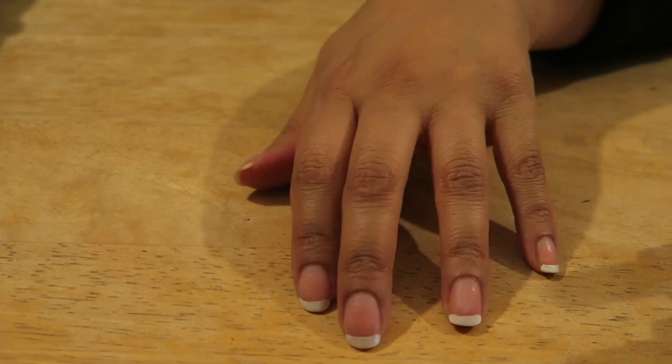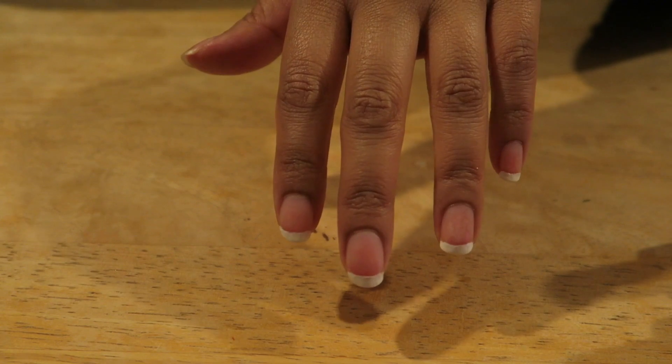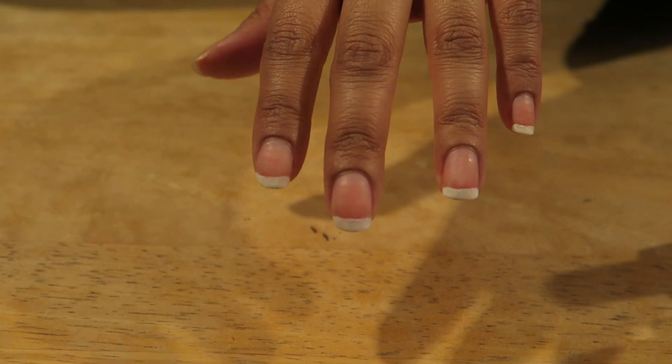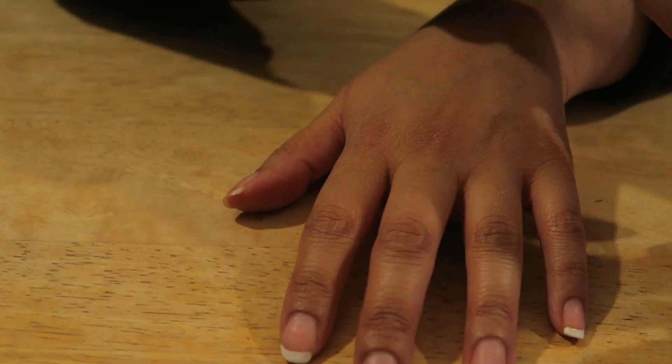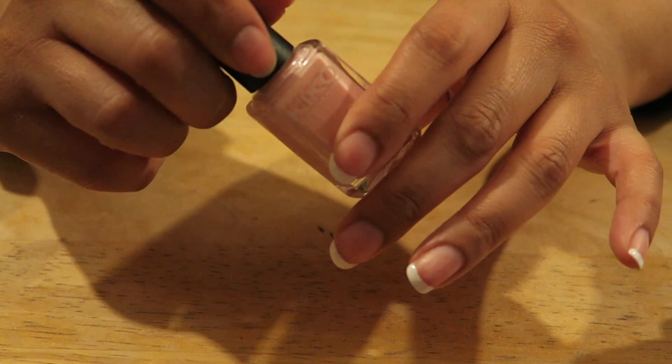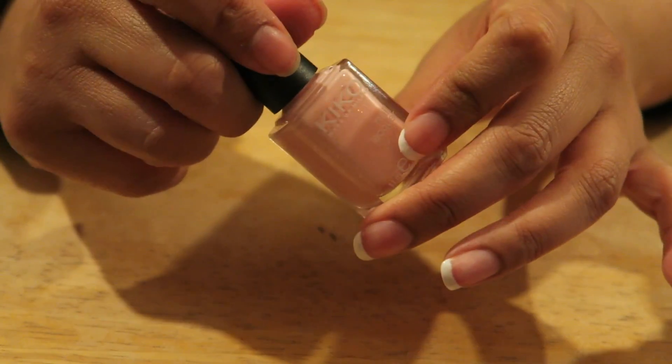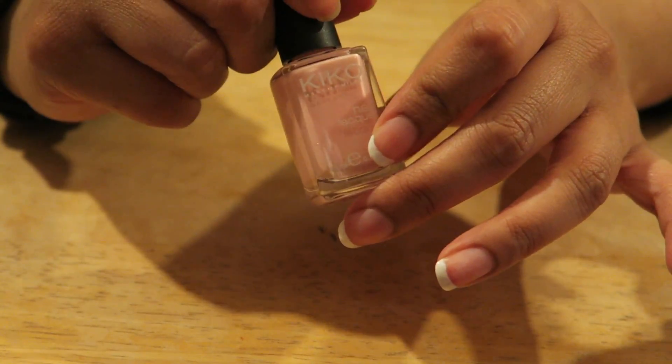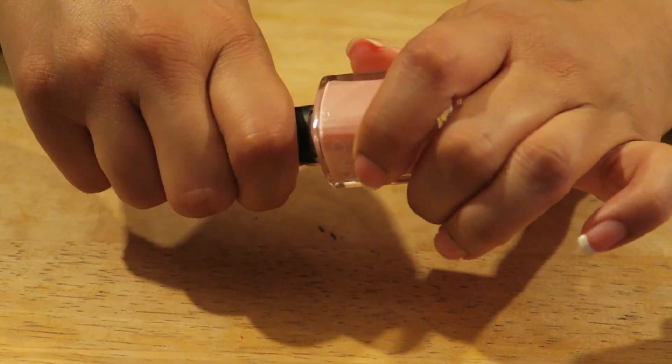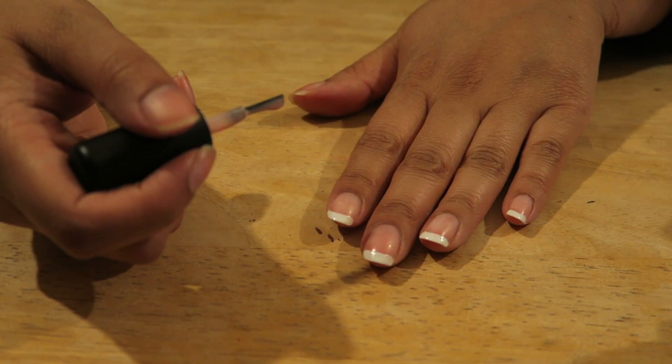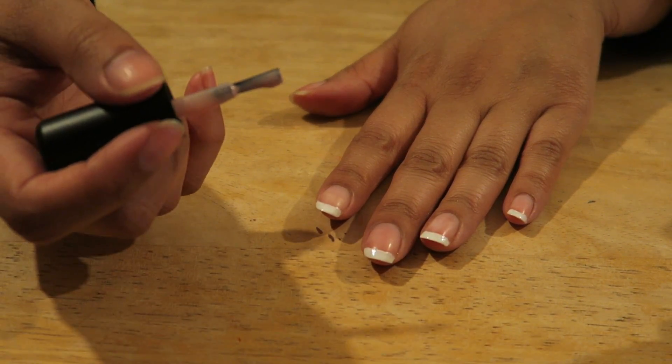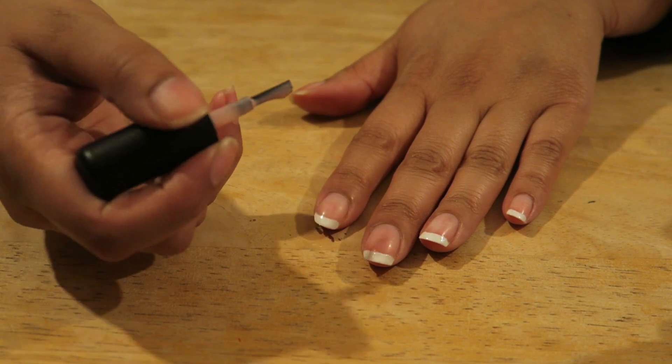There we go. Now that the tips are done for the French manicure, as you can see I haven't gone over massively. They kind of are my natural nail and it's very easy to do. Then what I normally do is just grab the pink base layer and open that.